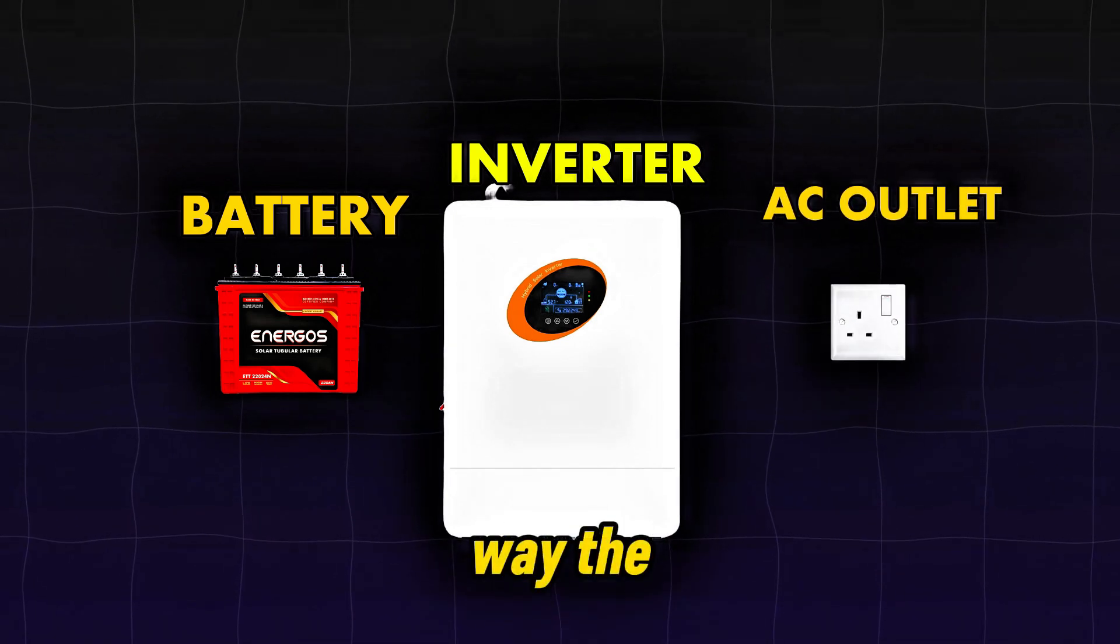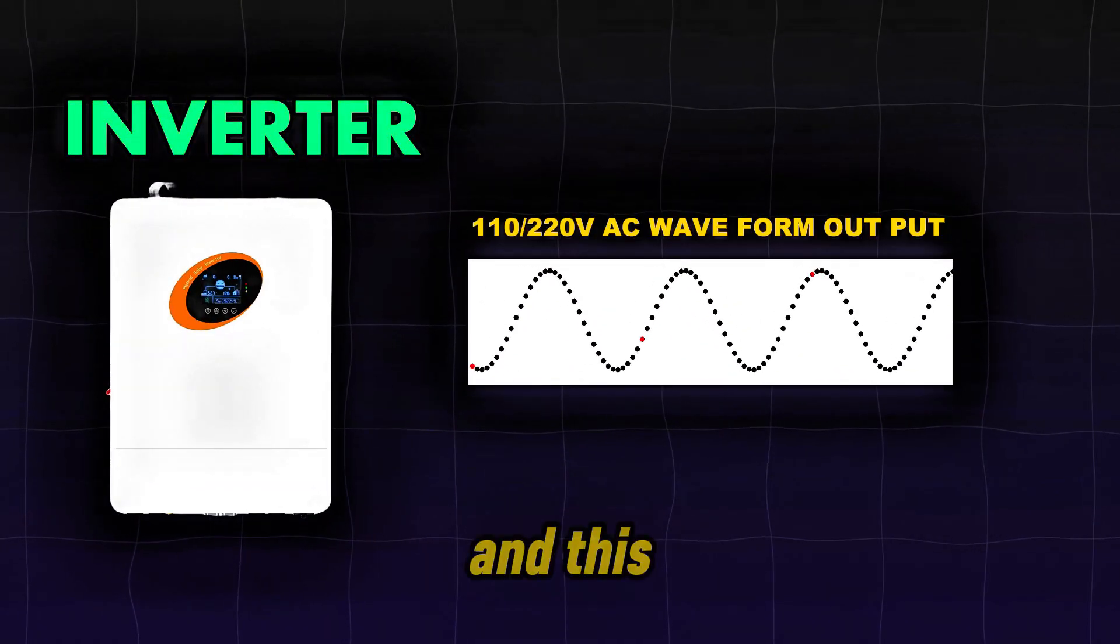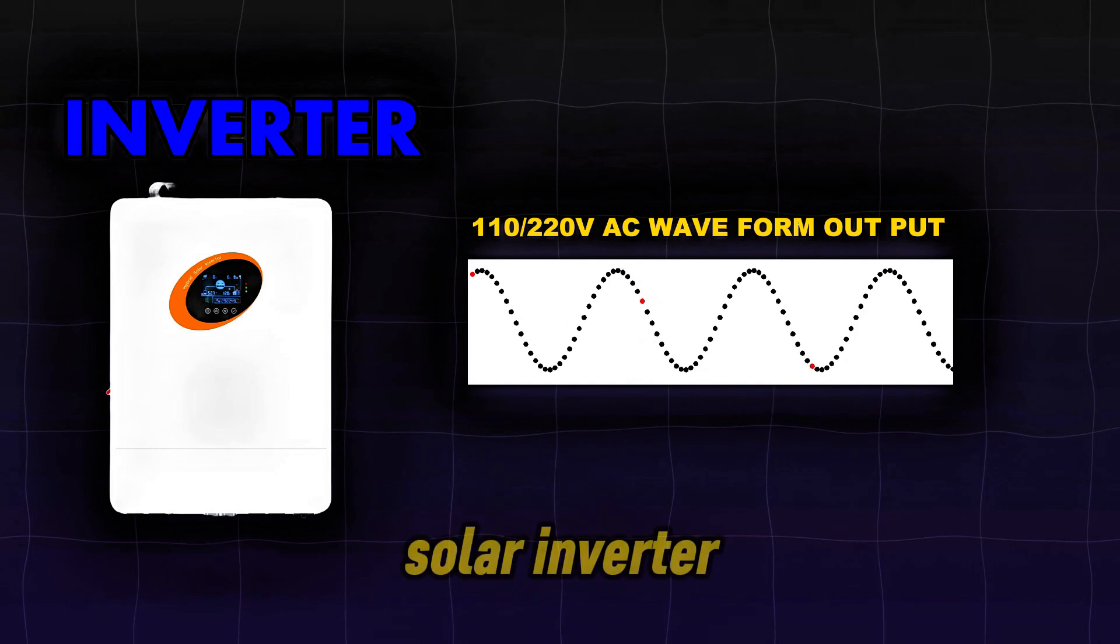Along the way, the inverter also steps up low voltage from DC to high voltage of AC, and this is exactly what happens in the solar inverter installation.